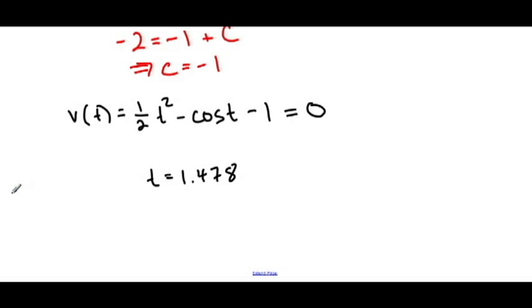It turns out that the zeros are at ±1.478. Of course, they've restricted our domain of t to be just zero and above. So we're only going to include the positive value of t. And so at t = 1.478, that is when the velocity of this particle is equal to zero.